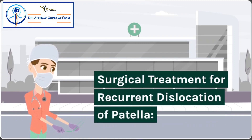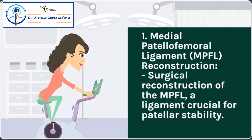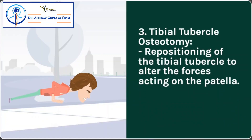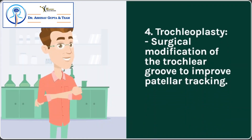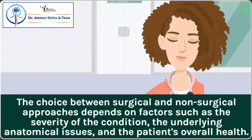Surgical treatment for recurrent dislocation of patella: 1. Medial patellofemoral ligament (MPFL) reconstruction – surgical reconstruction of the MPFL, a ligament crucial for patellar stability. 2. Lateral release – surgical release of tight lateral structures to balance patellar tracking. 3. Tibial tubercle osteotomy – repositioning of the tibial tubercle to alter the forces acting on the patella. 4. Trochleoplasty – surgical modification of the trochlear groove to improve patellar tracking. 5. Rehabilitation protocols – post-surgical physiotherapy to regain strength, range of motion, and optimize patellar stability. The choice between surgical and non-surgical approaches depends on factors such as severity, underlying anatomical issues, and the patient's overall health. Decisions should be made in consultation with an orthopedic specialist based on a thorough evaluation.